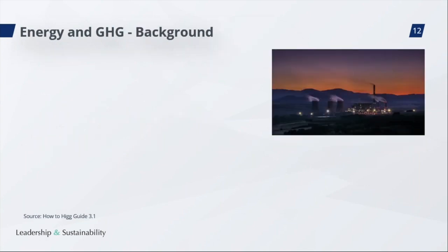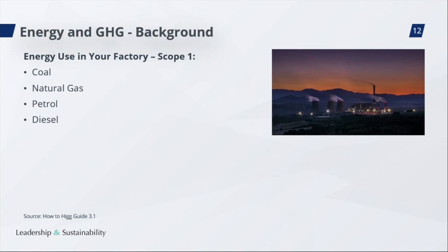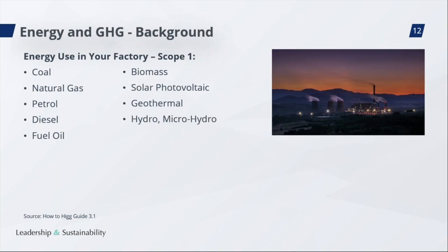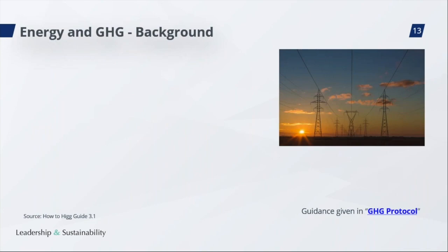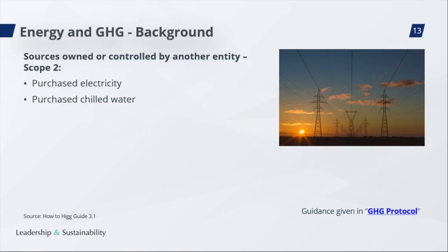Let's have a look at energy sources. You see here an overview of potential energy sources that are owned or controlled by your facility – these must be tracked. It also includes energy sources not used in the manufacturing process, such as canteens, dormitories, etc. To make sure you measure your energy sources accurately, we provide a link to the Greenhouse Gas Protocol for further guidance. These energy types used in your factory belong to what is called Scope 1 according to the Greenhouse Gas Protocol. There is also the option to purchase electricity, chilled water, and/or steam – those are called Scope 2 energy sources.